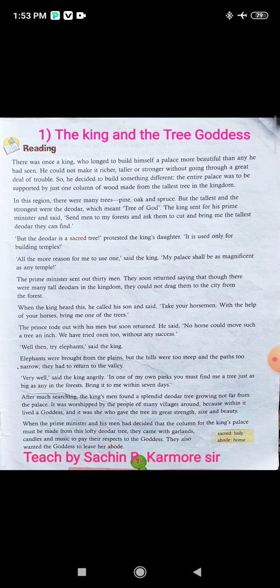Then the people of that region protested — and the king's own daughter also protested. Protest means 'virodh,' opposition. She said this tree should be used only for building temples. But the king did not listen. The king sent his prime minister along with about 30 men into the forest to cut the tallest devdha tree.